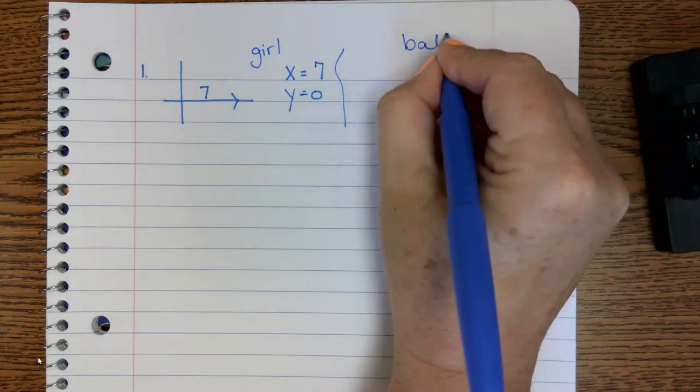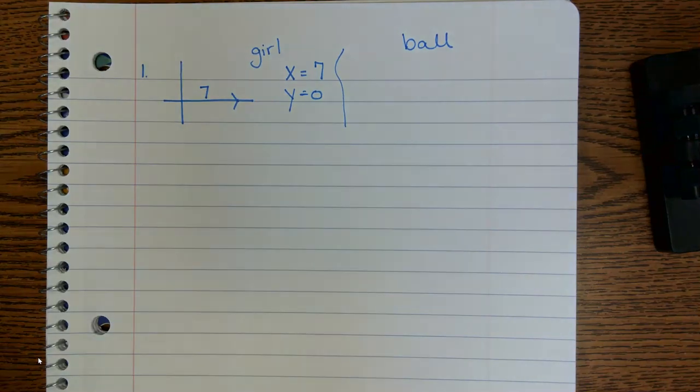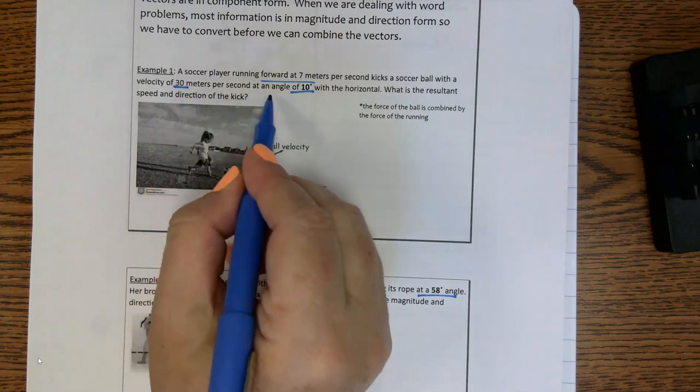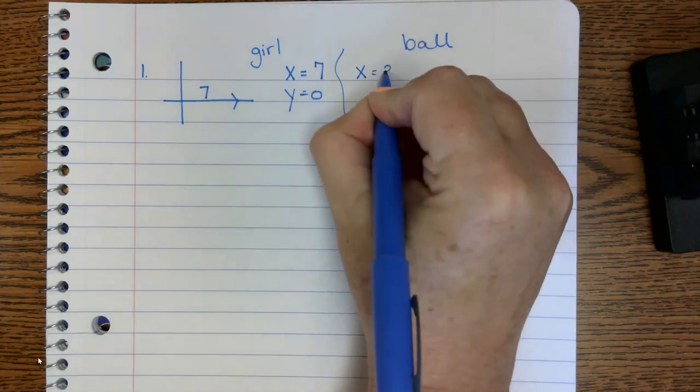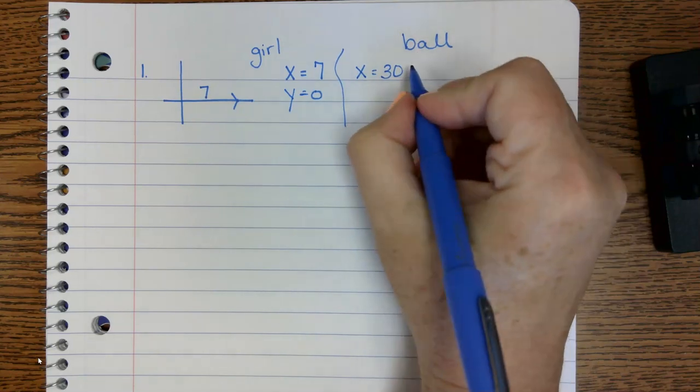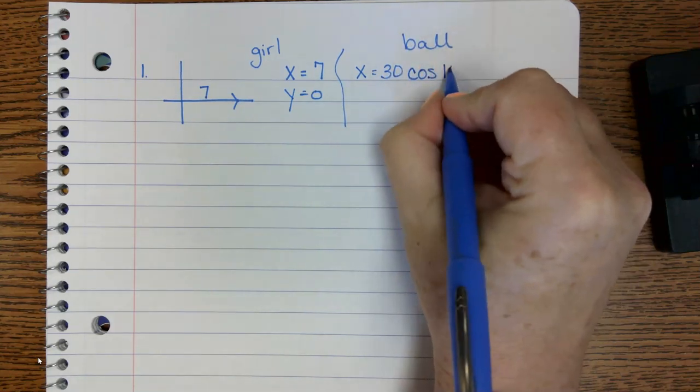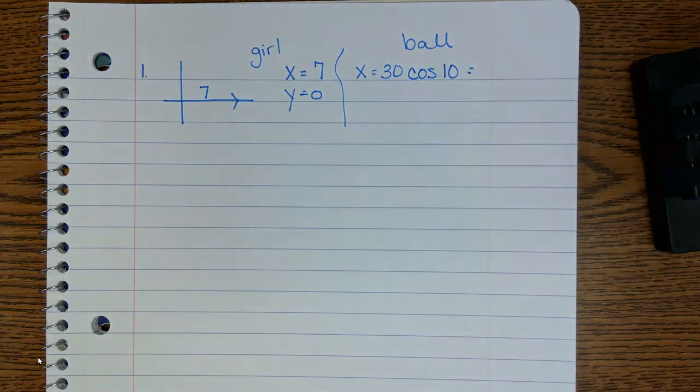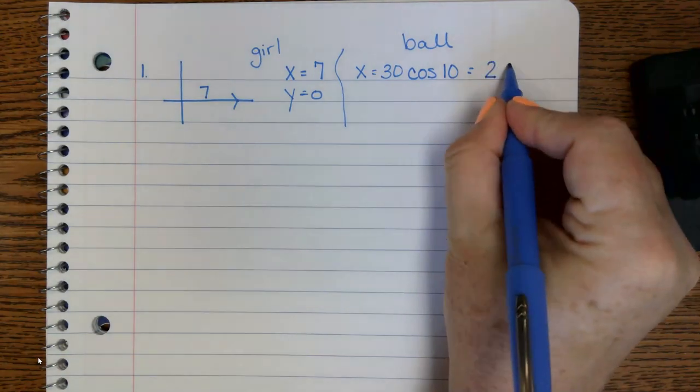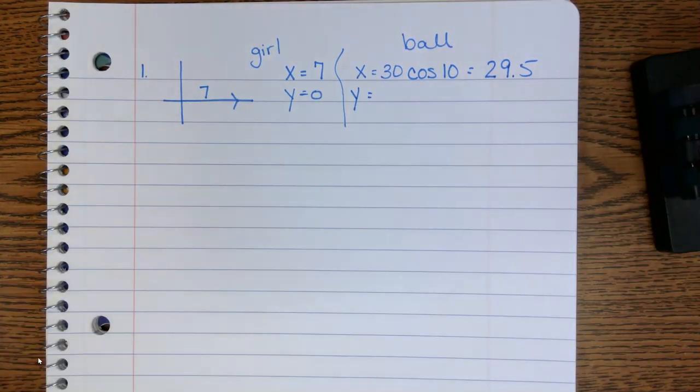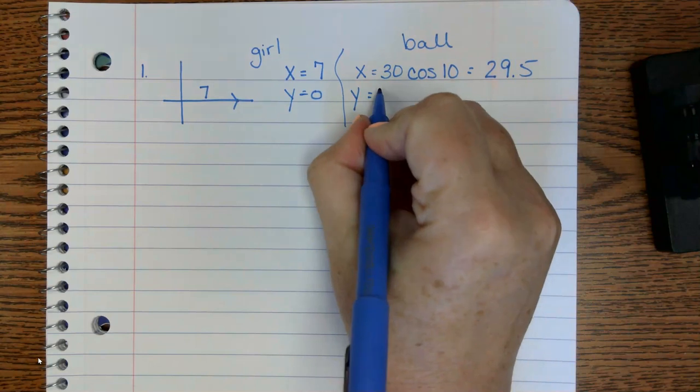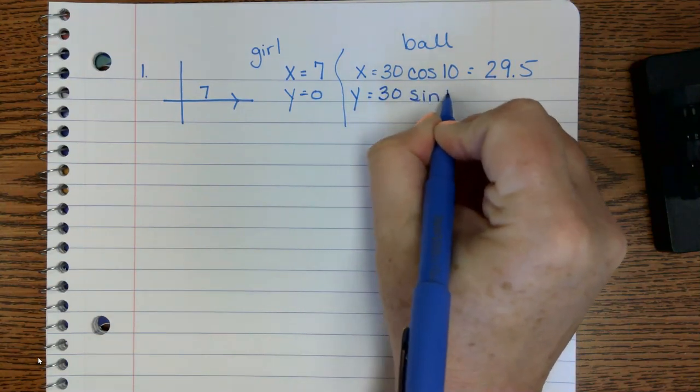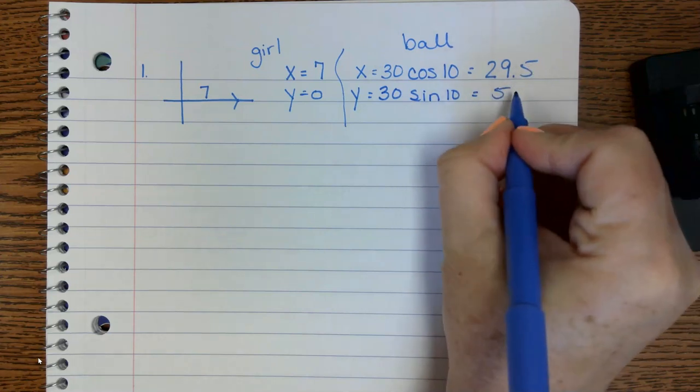So now what we're going to do is we're going to look at the ball. And this is where it says 30 meters per second at an angle of 10. So from the other word problems, remember it was the magnitude, which was 30. Because it's x, it's cosine of 10 degrees. Now you're going to put this in the calculator. And please make sure your calculator is in degrees. And I get 29.5. We also have to find the y component, because the soccer ball did get some lift at 10 degrees. So we've got to do the 30 sine 10, and that's going to give us 5.21.